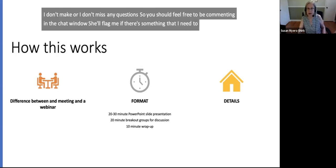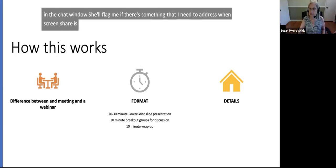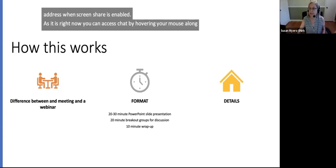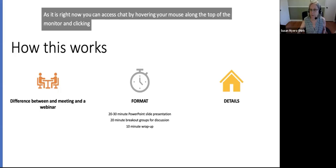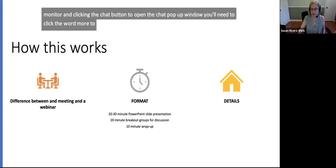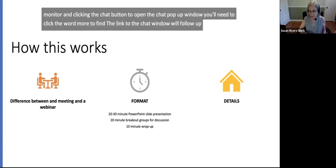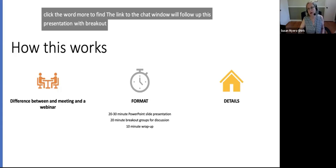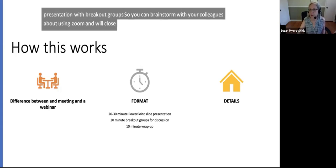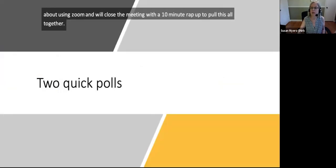When screen share is enabled, as it is right now, you can access chat by hovering your mouse along the top of the monitor and clicking the chat button to open the chat pop-up window. You'll need to click the word 'more' to find the link to the chat window. We'll follow up this presentation with breakout groups so you can brainstorm with your colleagues about using Zoom, and we'll close the meeting with a 10-minute wrap-up to pull this all together.